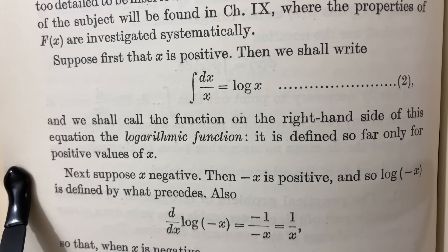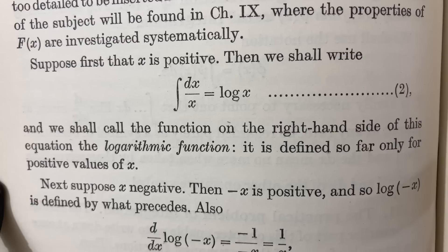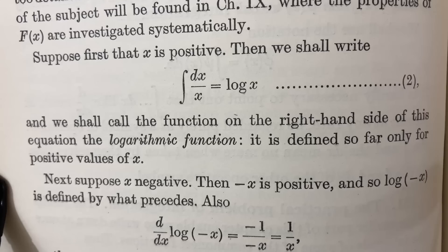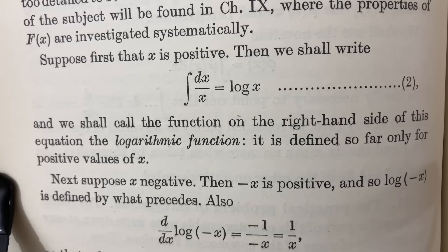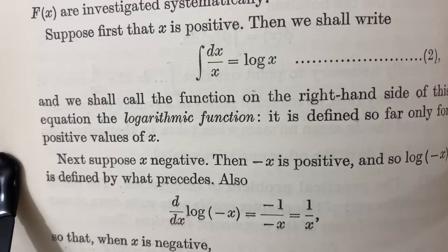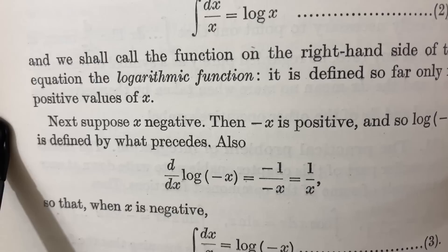Here the logarithm is defined. Suppose first that x is positive, then we shall write the integral of 1 over x with respect to x is equal to log x. And we shall call the function on the right hand side of this equation the logarithmic function. It is defined so far for positive values of x. Next, suppose x is negative. In this case, negative x is positive and so log negative x is defined by what proceeds.